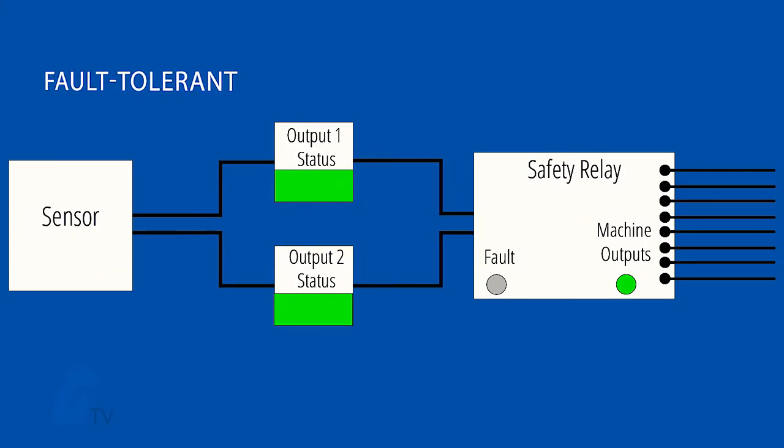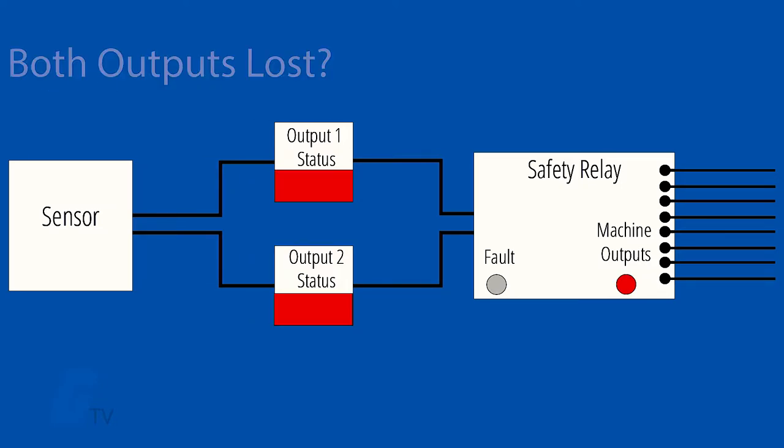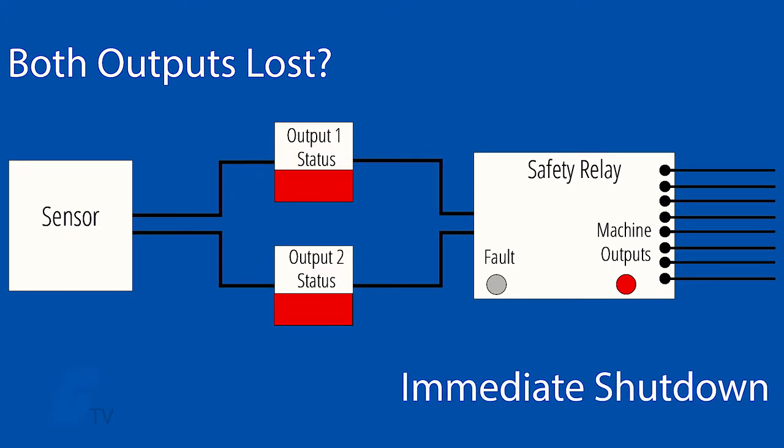The SRF series also offers fault-tolerant outputs, which prevent unnecessary machine shutdowns. If both OSSD safety outputs are lost due to an unsafe condition, such as a door being opened, the machine will immediately shut down.